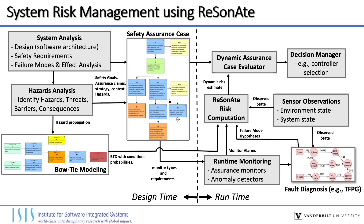This is a flowchart for Resonate, broken into design-time steps on the left and runtime steps on the right. The first steps — system analysis and hazard analysis — are pretty much the same as more traditional techniques. Even the bowtie modeling is not itself new; it is used to describe how hazards can propagate and escalate. However, what is new is where we measure conditional probabilities for this bowtie diagram. The blue blocks in these bowtie models — the barriers — can change. Their effectiveness may change based on the state of the system, so we observe in simulation what those relationships are and encode that information into the bowtie diagram.